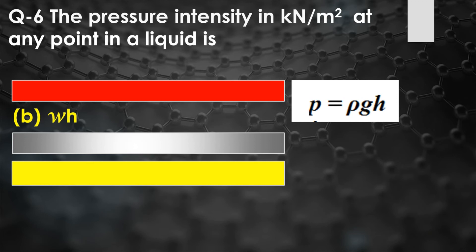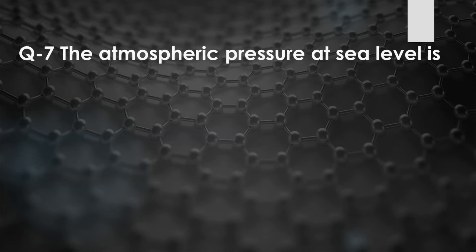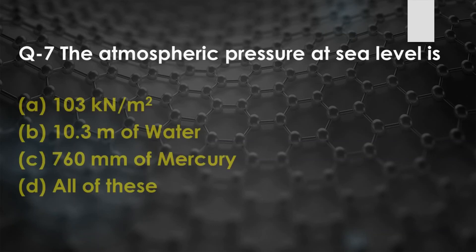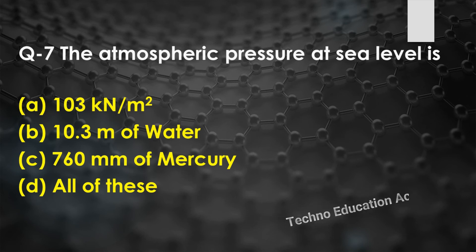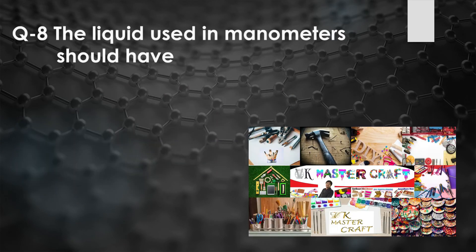Question number seven: The atmospheric pressure at sea level is — option A: 103 kN/m², option B: 10.3 meters of water, option C: 76 mm of mercury, option D: all of these. The atmospheric pressure at sea level is 760 mm of Hg, which is also equal to 103 kN/m² and 10.3 meters of water. The right answer is option D, all of these.